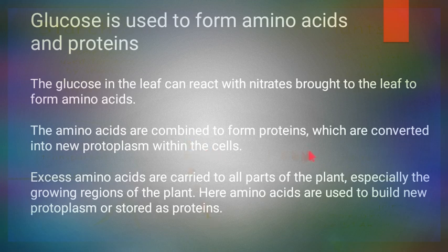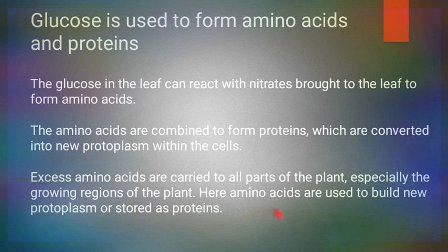Amino acids are combined to form proteins, which are converted into new protoplasm within the cells. Protein is used for the growth of the plant and to form new protoplasm. Excess amino acids are carried to all parts of the plant, especially the growing regions, where they are used to build new protoplasm or stored as protein.